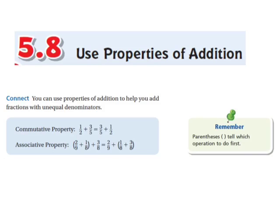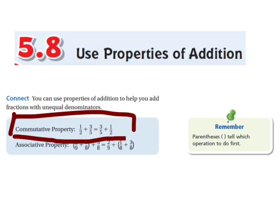The commutative property states that you can switch these two numbers. One half plus three fifths equals three fifths plus one half. You can just switch the two terms in your addition problem and you'll get the same answer.